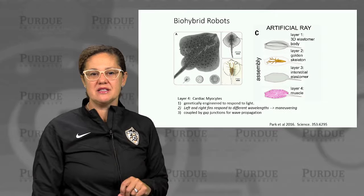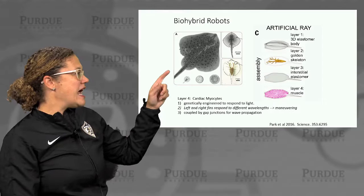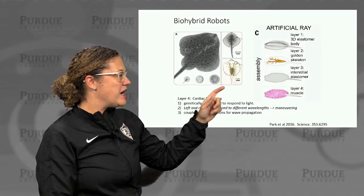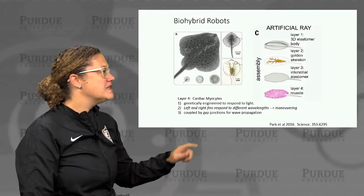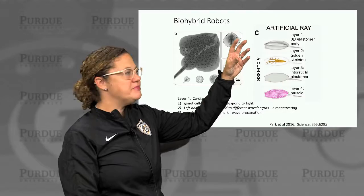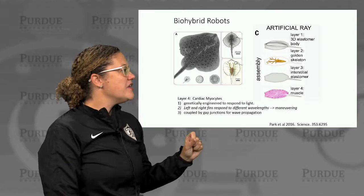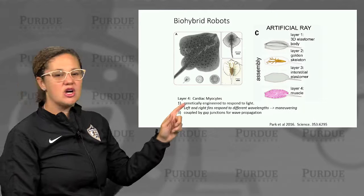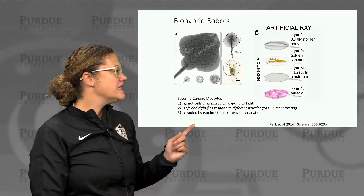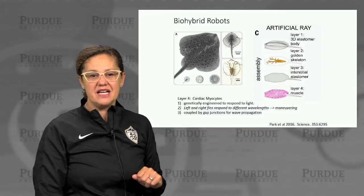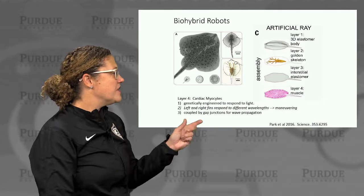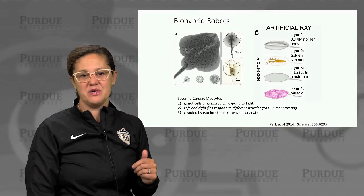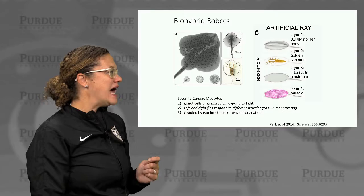Looking deeper at the artificial ray: comparing an actual living ray to the bio-robot, the robot is built in layers — elastomers forming a three-dimensional structure, a gold skeleton layer, an interstitial elastomer layer, and a layer of living cells forming the muscle. That muscle layer consists of cardiac myocytes genetically engineered to respond to light. The left and right fins respond to different wavelengths of light, allowing maneuvering in different directions. Those cells are coupled by gap junctions allowing wave propagation and coordination, forming an artificial muscle layer that guides and steers the robot.